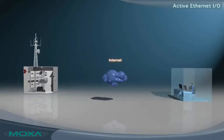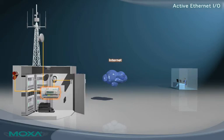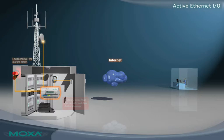Active Ethernet I.O. enables an immediate response to I.O. events. The I.O. server can send real-time reports to network hosts and simple commands to attached devices. Local alarm control can be achieved without an additional controller or PC.